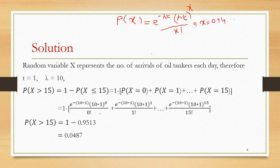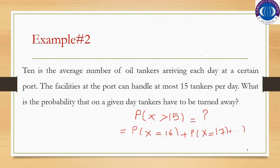Using the probability mass function of Poisson distribution, here lambda equals ten, t equals one, and x takes values from zero up to fifteen. By simplifying all the terms, you get the probability 0.0487, which is the probability of turning away tankers on a given day.